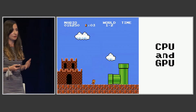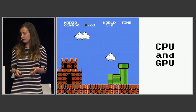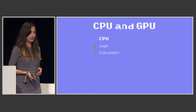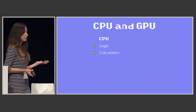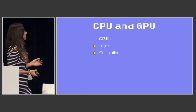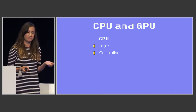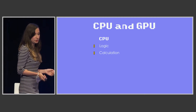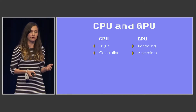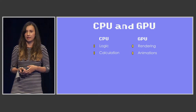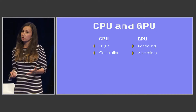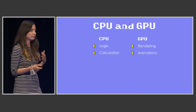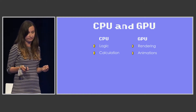Now let's talk about the CPU and the GPU. The CPU, or central processing unit, is the brains of your device — it's responsible for all logic and calculations. The GPU, or graphics processing unit, does all the rendering and animation: scrolling, pinching, panning, zooming, that kind of stuff.